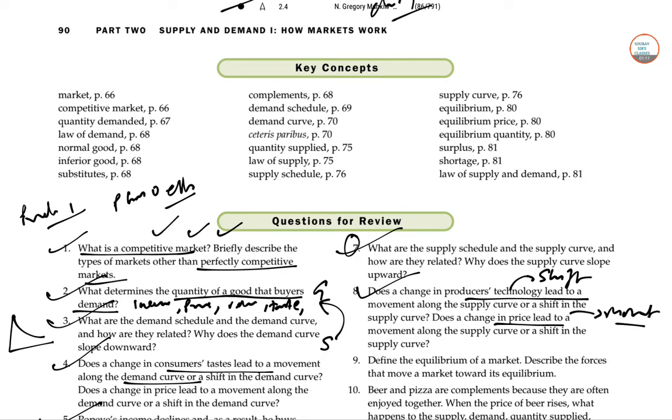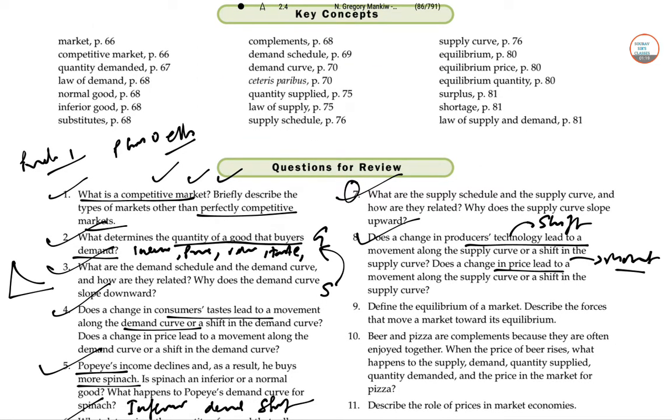Define the equilibrium of a market. Describe the forces that move a market towards this equilibrium. Equilibrium is a market where the price and quantity comes to a standstill. It is actually the intersection point between the demand and the supply curve.